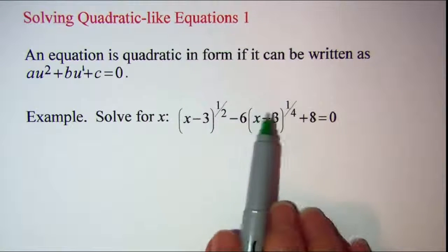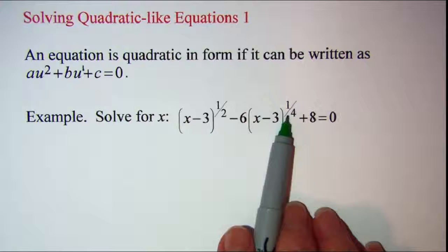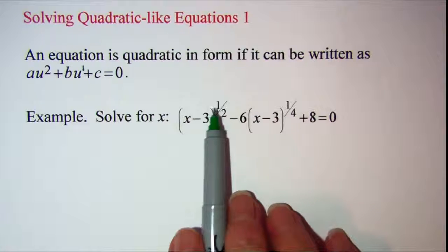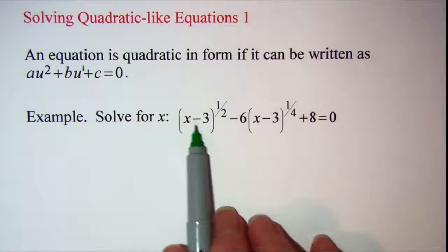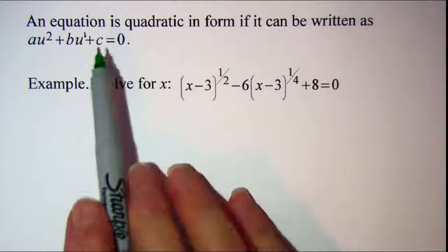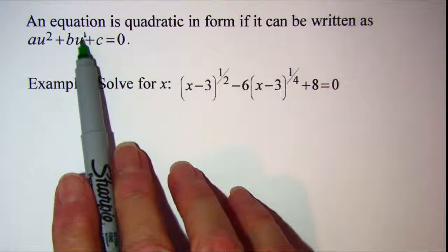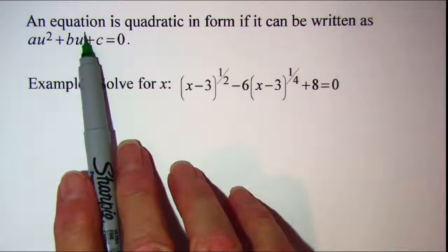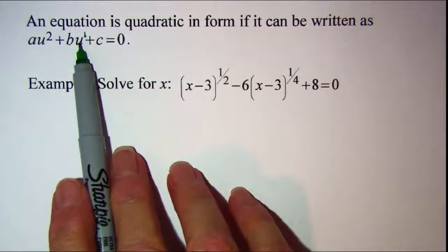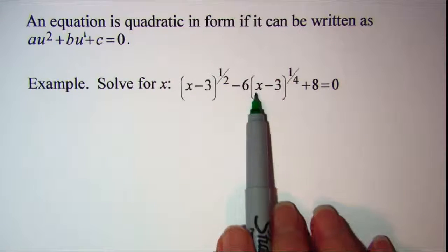To determine if this is quadratic in form we would look at this exponent. If we multiply this exponent by two we get this exponent. We also have the same base. So we're going to take that term that has the smaller exponent and let u be that expression.